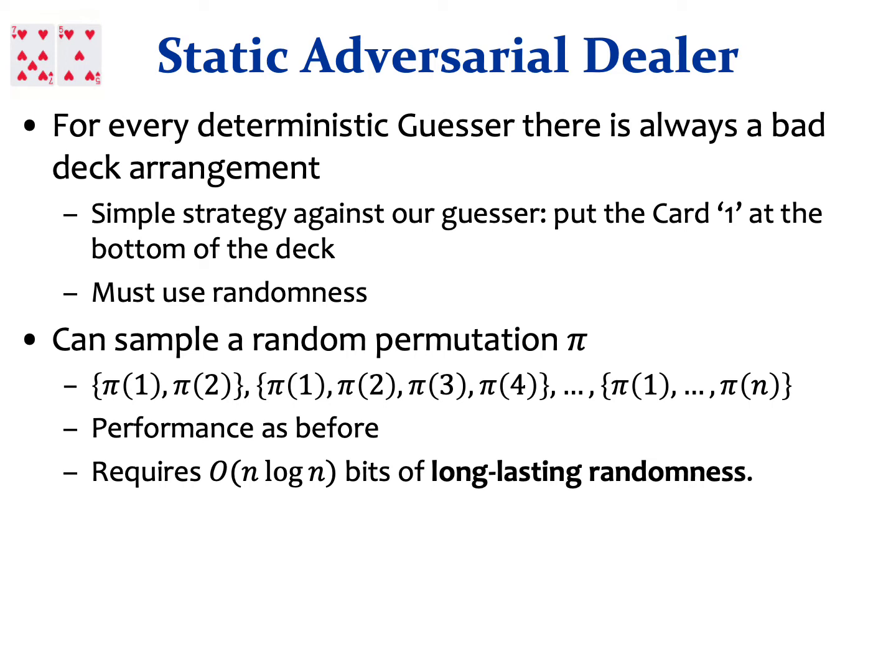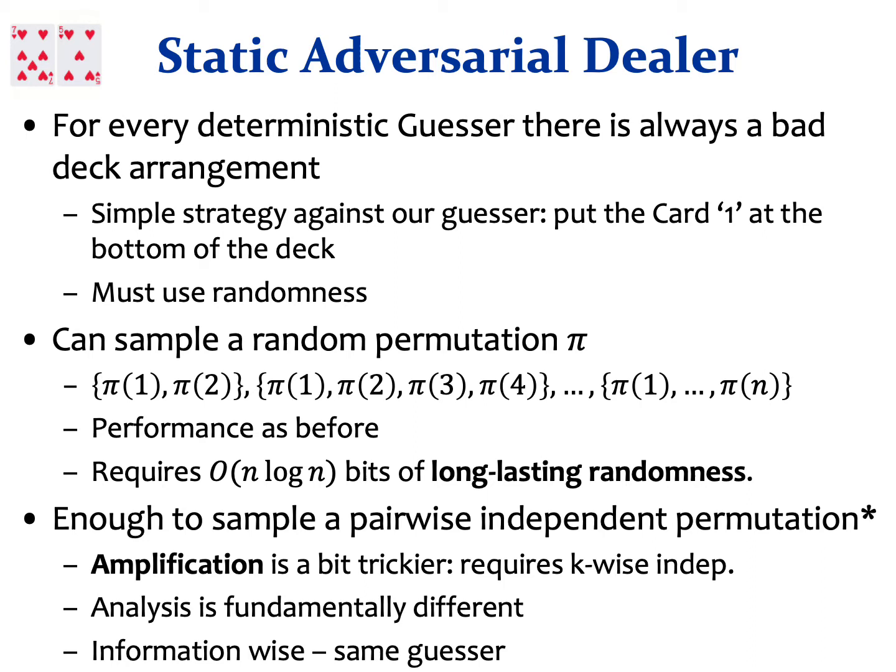One thing we can do is sample a random permutation pi and randomize our subsets, tracking the subsets {pi(1)}, {pi(1), pi(2)}, {pi(1), pi(2), pi(3), pi(4)}, and so on. The performance would hold as before, but we would require order n log n bits of long-lasting randomness, which we wish to avoid. In the paper, we show that it is enough to sample a pairwise independent permutation to randomize the subsets.